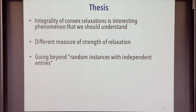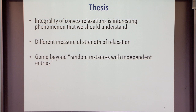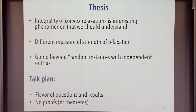Many of the instances I talked about have the flavor of a data matrix with independent entries. For example, in the stochastic block model, there were ones with some probability inside blocks and a different probability in cross blocks. It would be nice to understand integrality in regimes where you don't have independent entries but some inherent dependencies in the distribution. My goal is to give you a flavor of some of these questions and results — I'm not going to prove anything or even state any theorems.